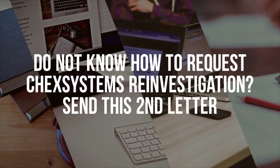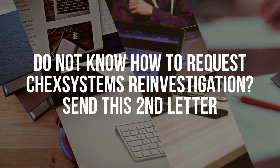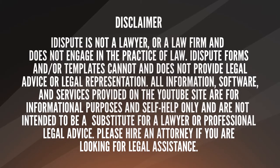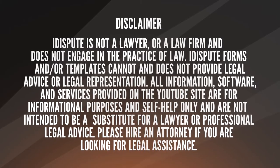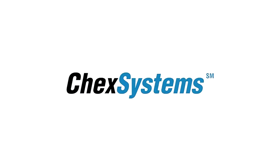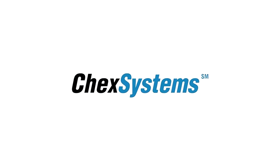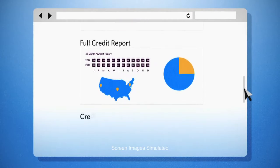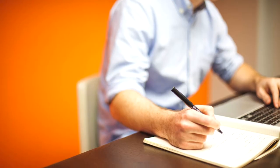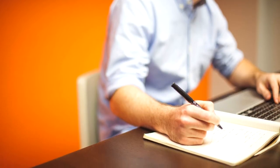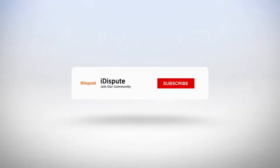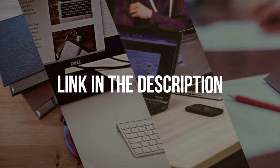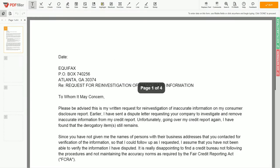Do you not know how to request a Check Systems reinvestigation? Send this second letter. If Check Systems ignored your first dispute letter by failing to remove derogatory items from your credit report, send this reinvestigation letter to Check Systems. Please follow the link in the description to start filling the form.